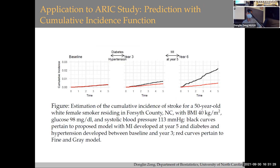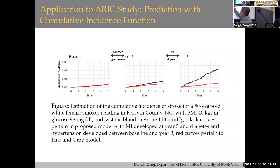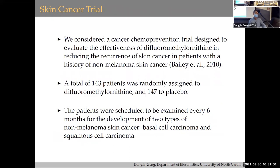We also have a simple app demonstrating how, given a patient's information, we can output their risk profile over time. For example, at baseline the risk profile looks one way; at year three, if the person has developed hypertension or diabetes, the risk updates accordingly. This kind of dynamic risk assessment is very natural for time-sensitive treatment decisions.